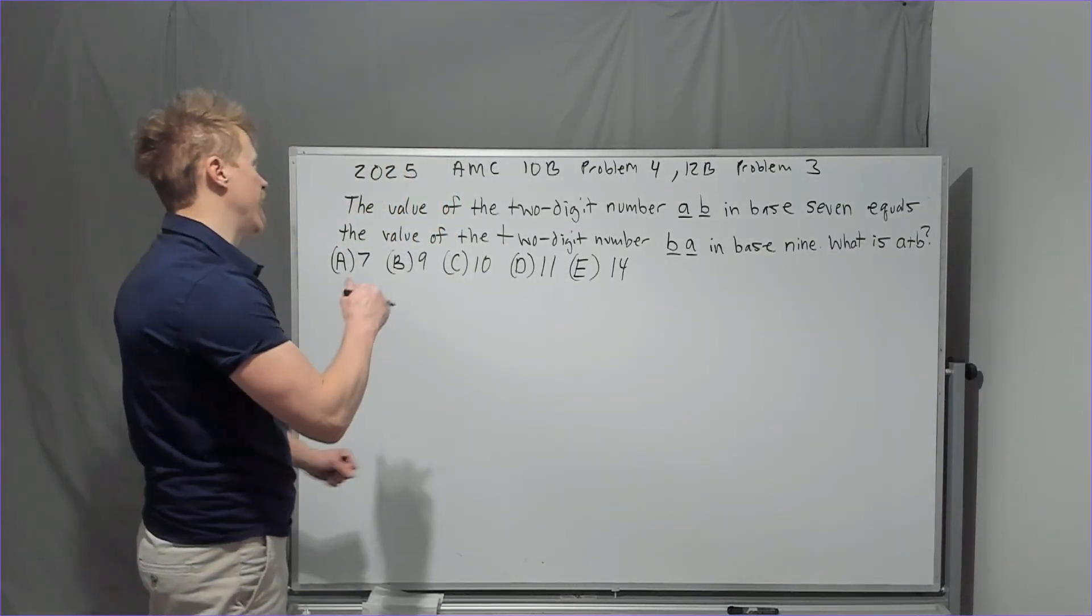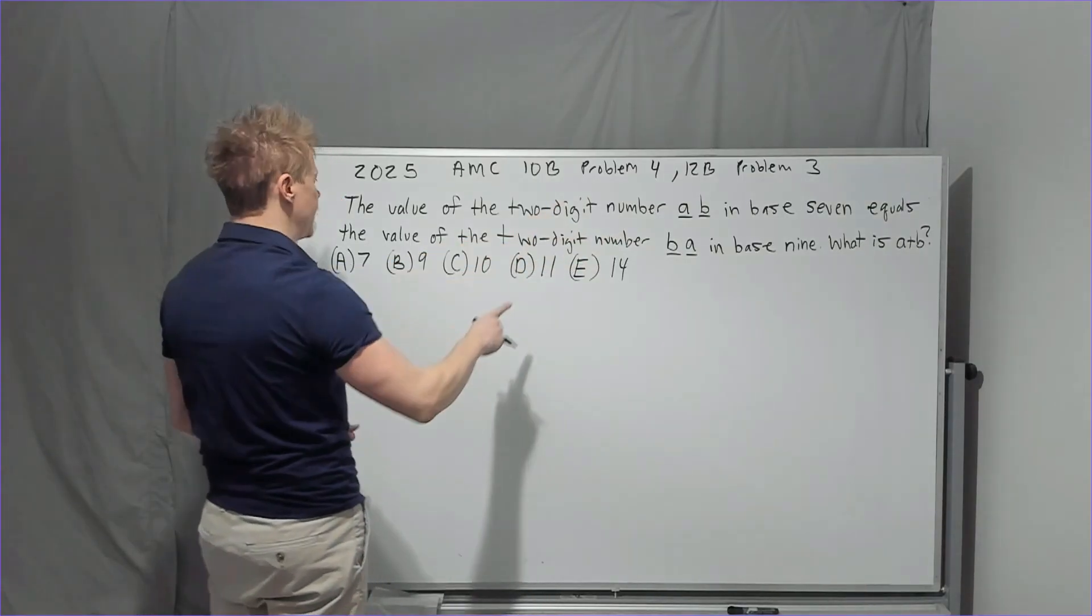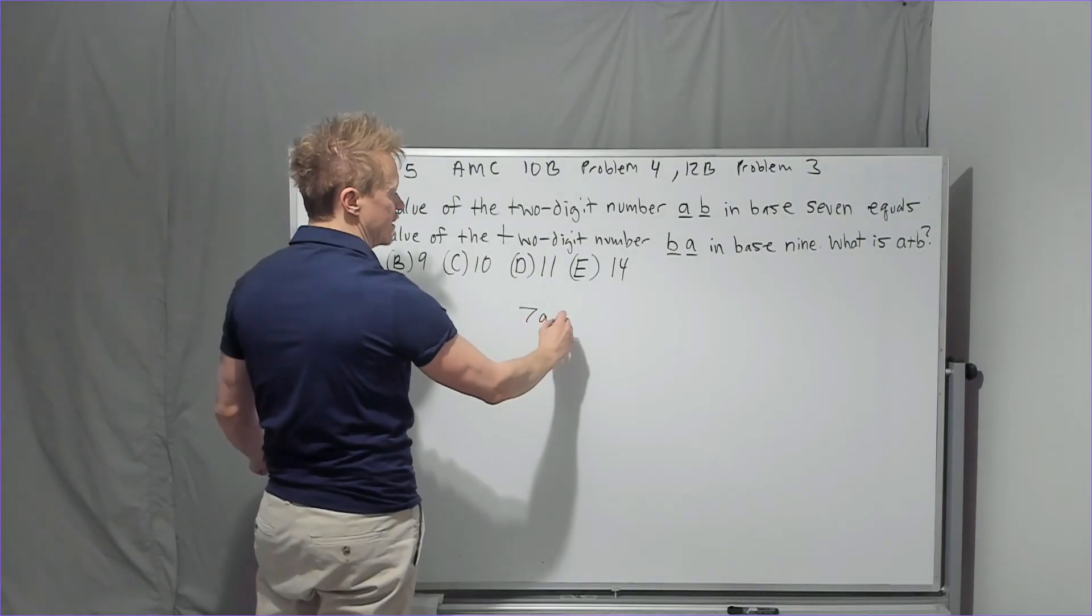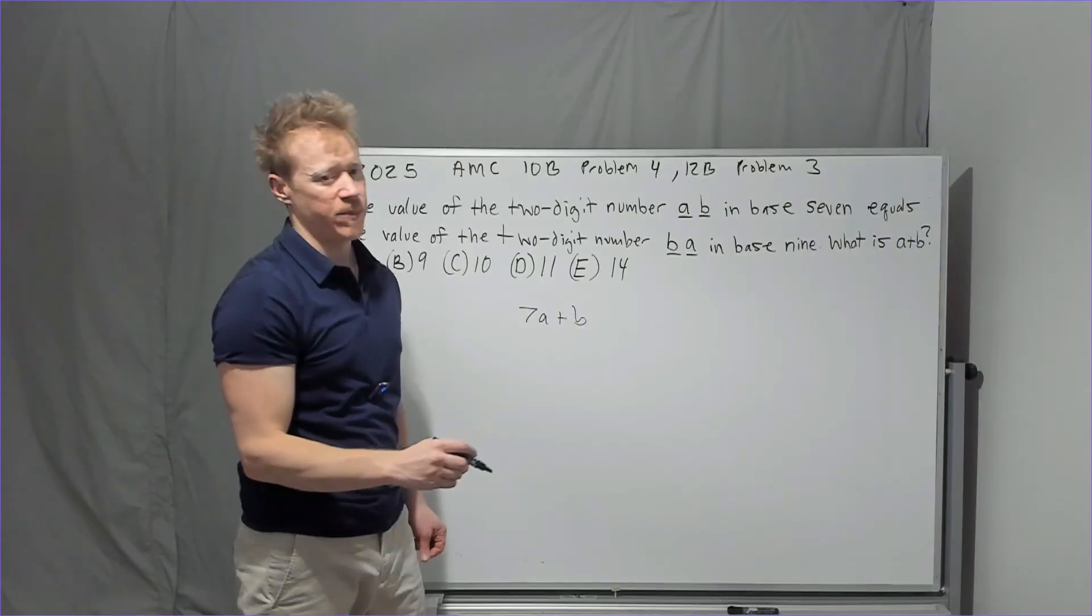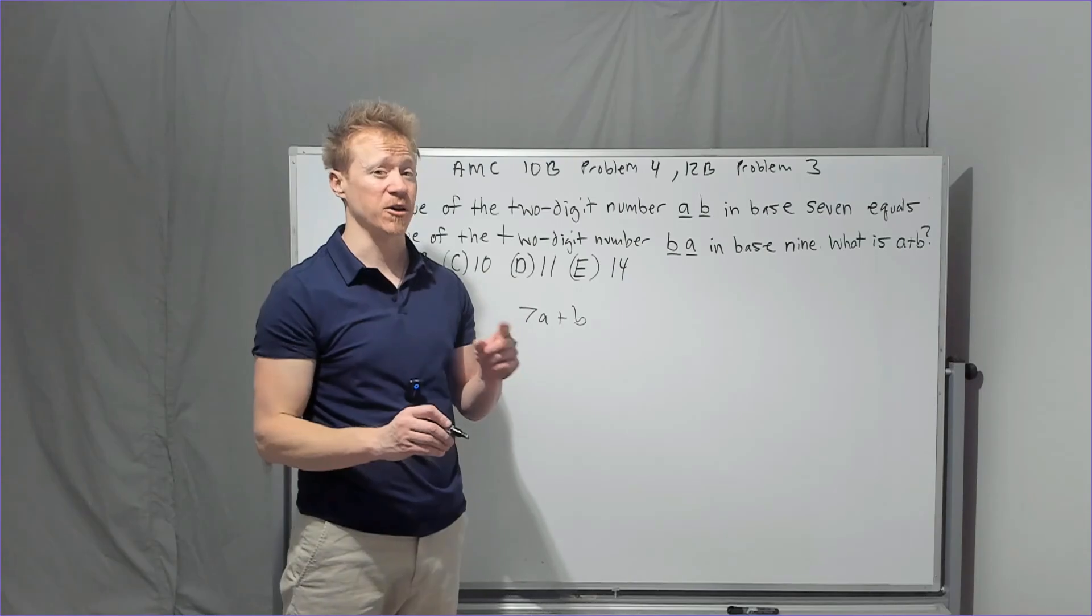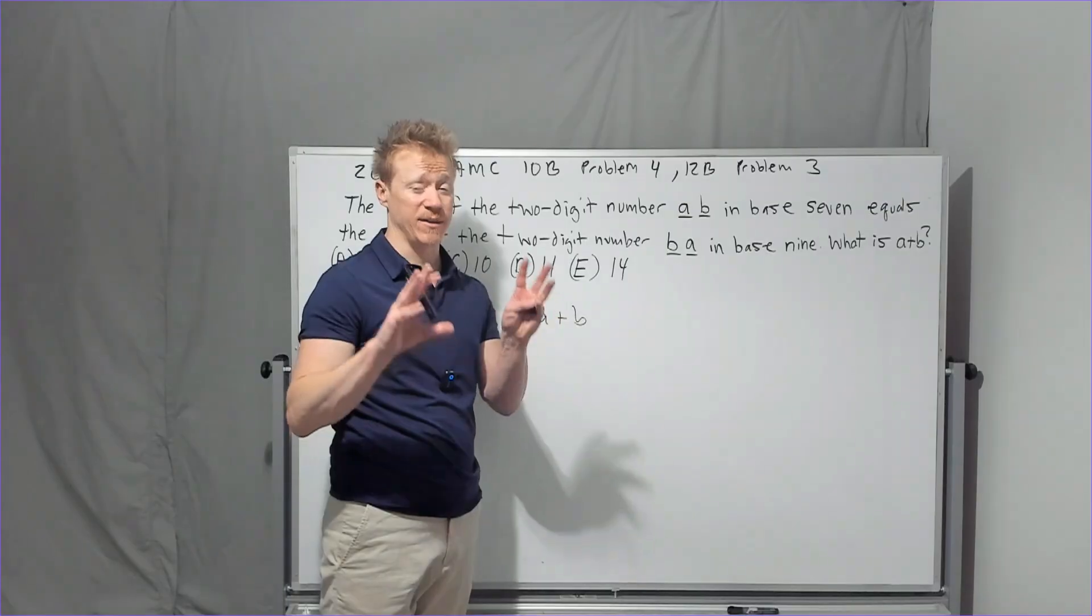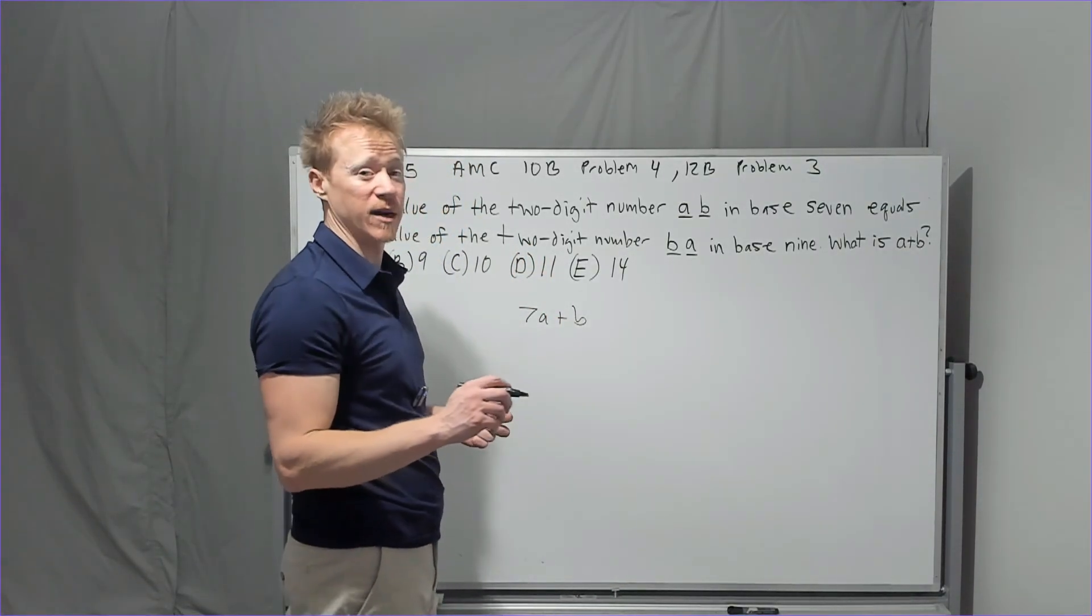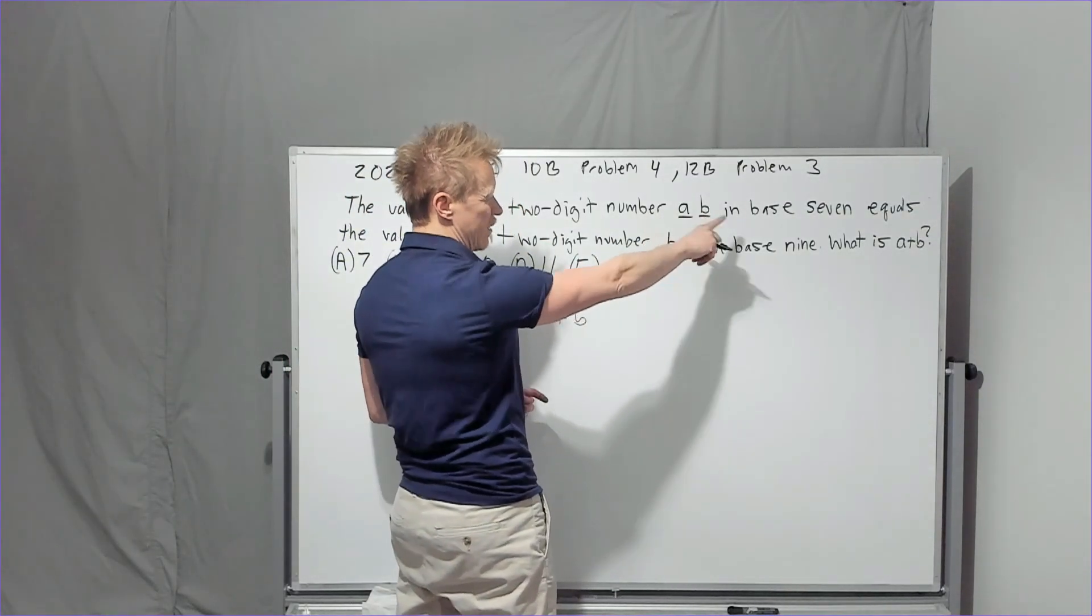Let's get to problem four. And on to the next problem in our rapid fire set. 2025 10B problem four, 12B problem three. The value of the two digit number ab and base seven. You should immediately write 7a plus b. This is what you write when you see that. Now if you don't know what base seven is, you haven't done intro to number theory yet, I will have a new class for this book starting the first week of December. We go very in depth and cover everything in the text. If you'd like to be a part of it, there's a maximum of eight spots. And two of them are already taken. So reach out to me through my channel if you'd like to be a part of that group. Six spots left.